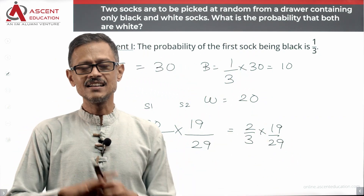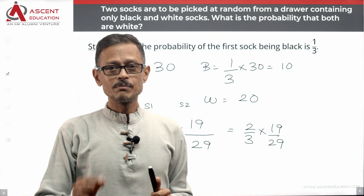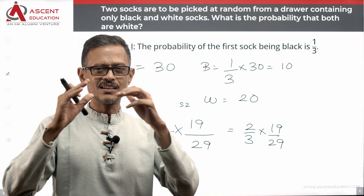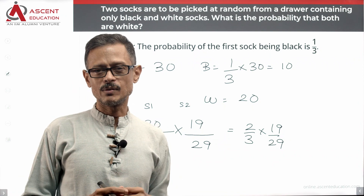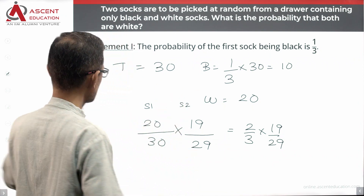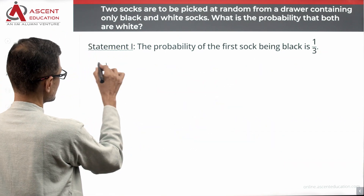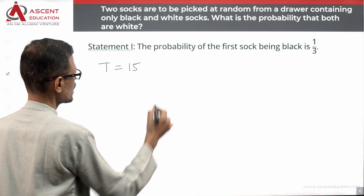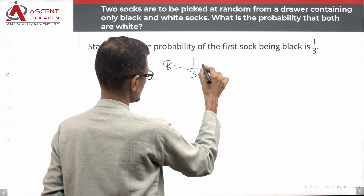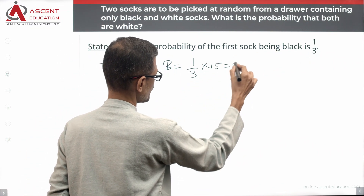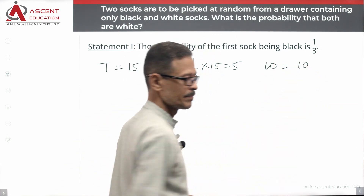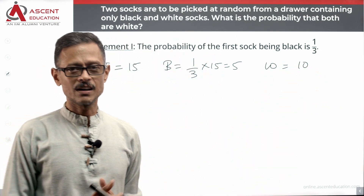But we need a unique answer, so let's try a different total number of socks. Let's say the total is 15. The number of black socks is 1/3 of 15, which equals 5. The number of white socks equals 10. We compute the probability that both socks are white with 15 total.